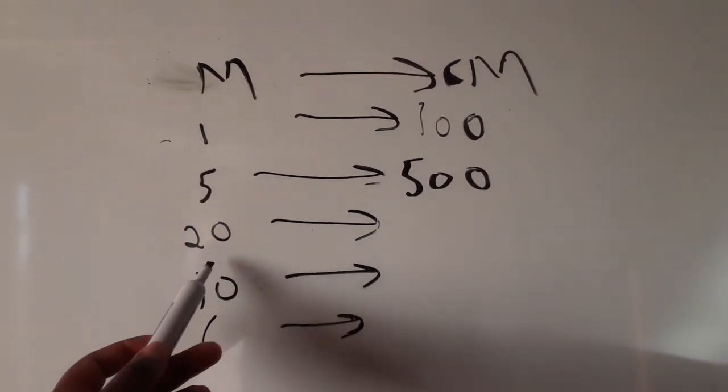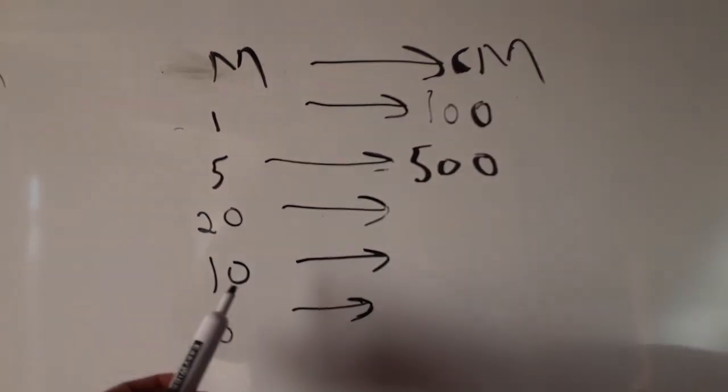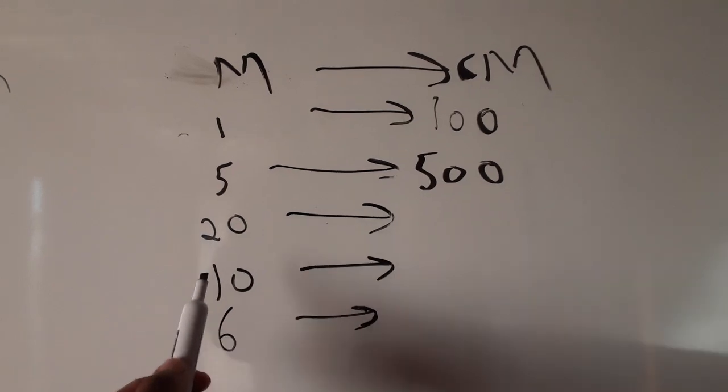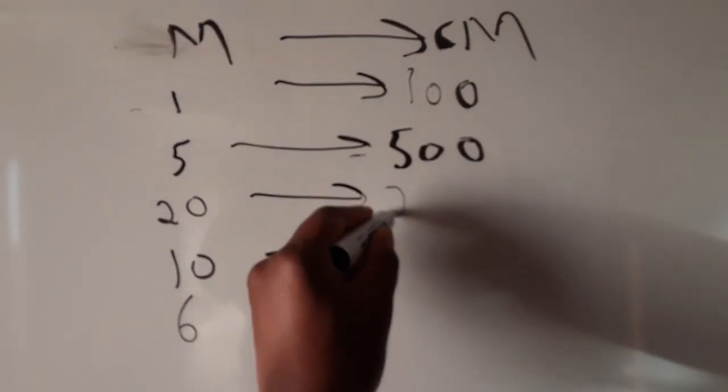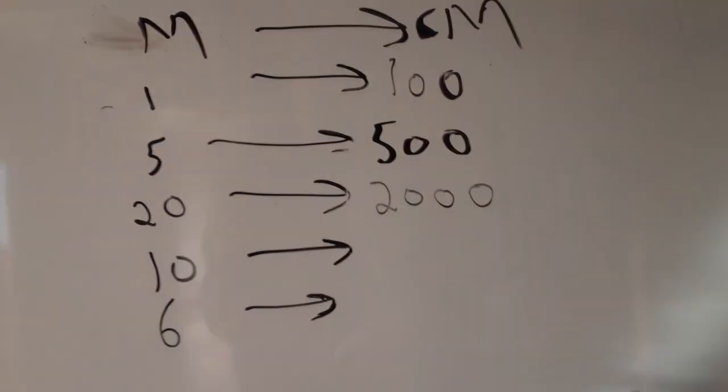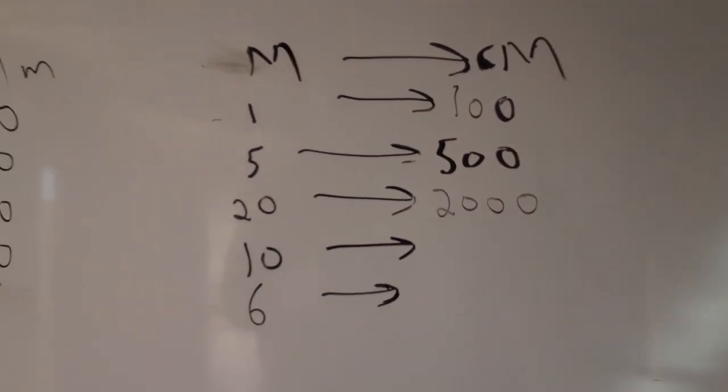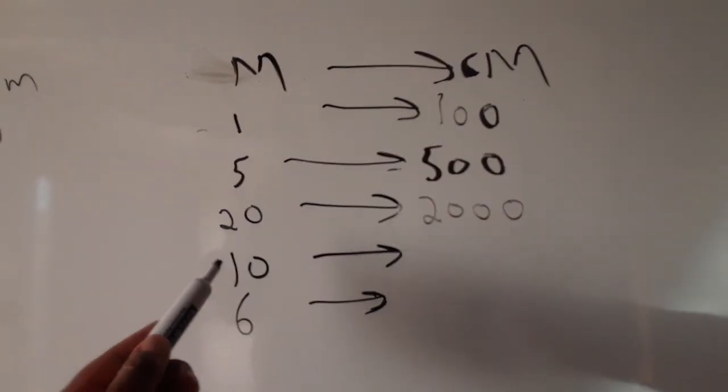Then we have 20 again. So we have 20 meters. We're going to say 20 times 100, which is going to give us 2,000. So 2,000 centimeters equals 20 meters.